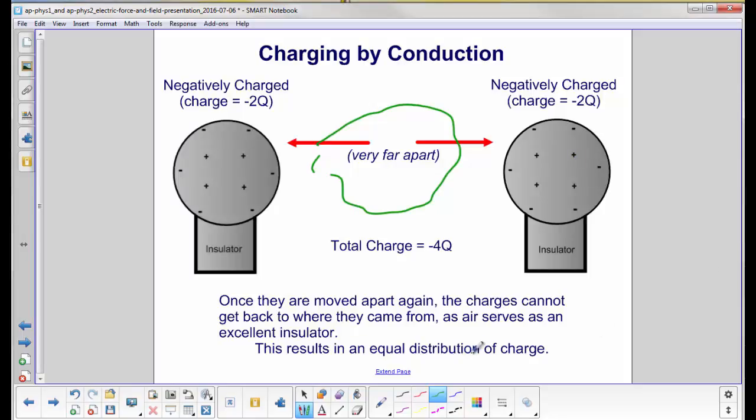What we have is an equal distribution of charge. We have 1, 2, 3, 4, 5, 6 negative charges that are over here. Remember, they split equally to get as far away from each other as possible.